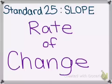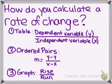Standard 25 is going to help us find the slope of a line, or what we call the rate of change. We're going to look at three different ways to calculate the rate of change. We're going to look at some tables and talk about the ratio of the dependent variable over the independent variable, or the change of y over the change of x.